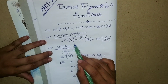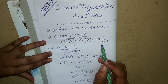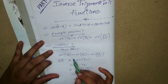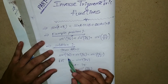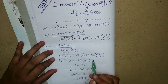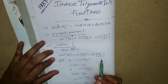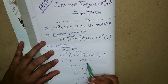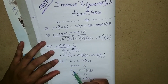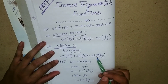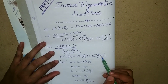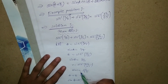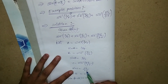The example problem is: prove that sin inverse of 3 by 5 plus sin inverse of 5 by 13 equals sin inverse of 56 by 65. Solution: let a equals sin inverse of 3 by 5, and b equals sin inverse of 5 by 13, and c equals sin inverse of 56 by 65. So then sin c equals 56 by 65.